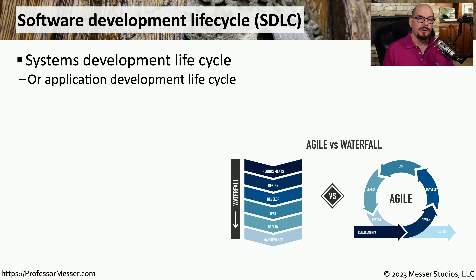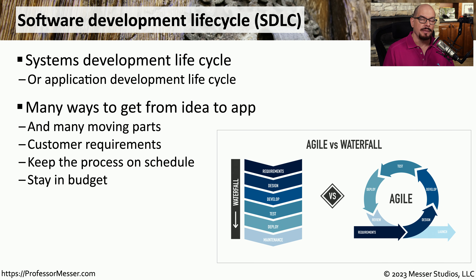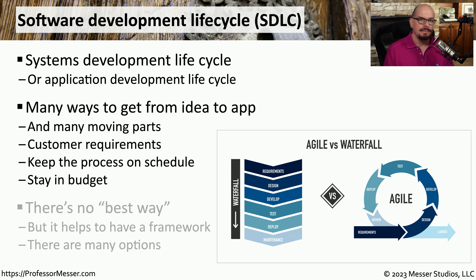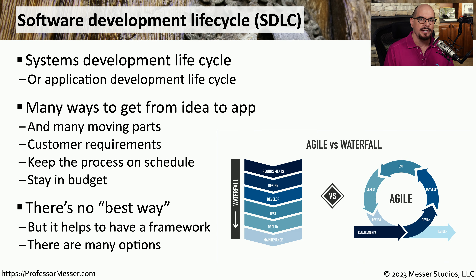If you're an application developer, there are a set of processes and procedures associated with creating software. We refer to this as the software development lifecycle, or SDLC. The goal of the SDLC is to move from the idea phase all the way through until we have an application — involving creating requirements, working with end users, creating the application, testing it, and then deploying it on schedule and on budget. Having some type of structure can help keep everyone focused and on track.